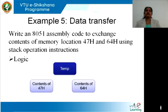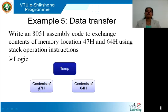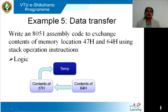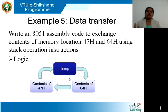Let us look at an example of how an exchange operation can be done using push and pop. We have to exchange the contents of memory location 47H with the contents of memory location 64H. Normally we use a temporary variable: put the content of 47H into temp, then copy 64H into 47H, then put temp into 64H. This can be done with the exchange instruction or the move instruction — but here we use push and pop.